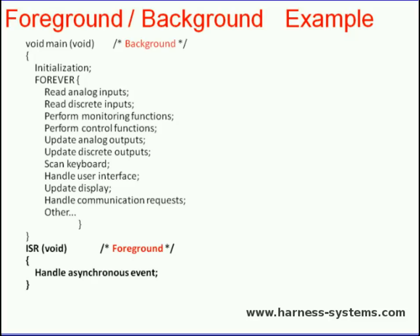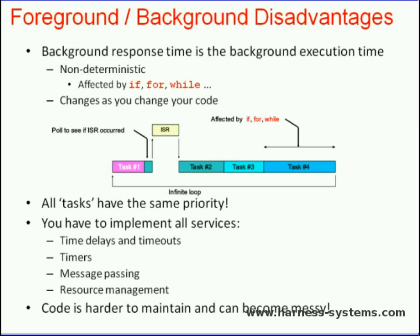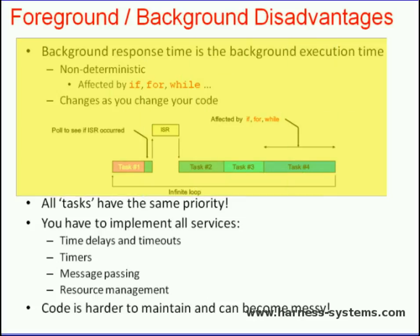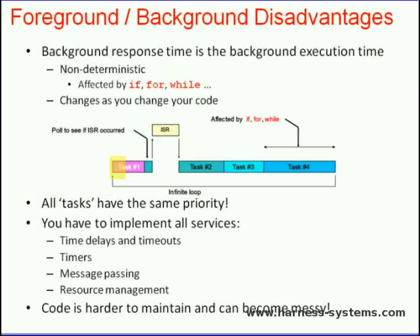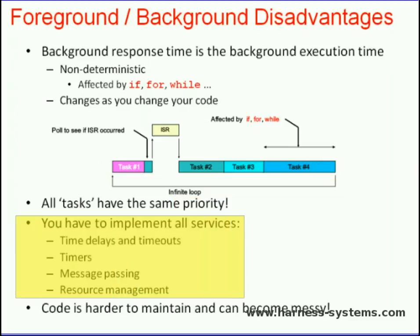Advantages and disadvantages of foreground-background: this approach suits low-cost embedded applications. Memory requirements depend only on your application — 1 KB for small applications to 16 to 32 MB for larger machines. The worst-case task level response time depends on how long the background loop takes to execute. Since execution time of typical code is not constant due to conditional statements like if, for, and while, the time for successive passes through a portion of the loop is non-deterministic. All tasks have the same priority; code executes in sequence, so if any important event occurs, it is handled at the same priority as everything else. Hence, you may need to execute the same code often to avoid missing an event. You have to implement all services like time delays and timeouts, timers, message passing, and resource management. Code is harder to maintain and can become messy.